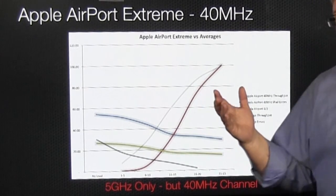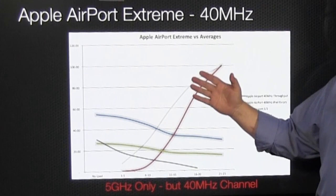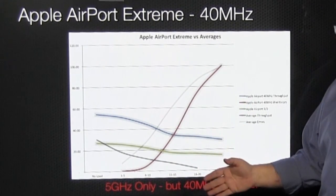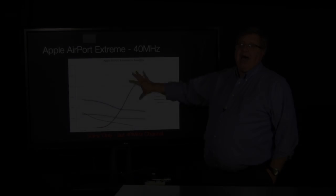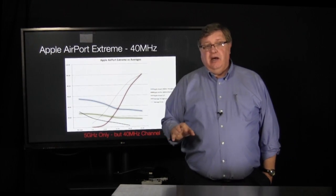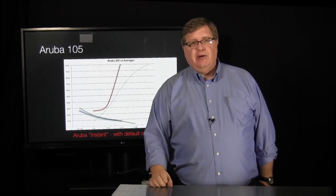And here's our Airport Extreme, way to the right of the average. Blue line is 40 megahertz, yes. More than double our throughput of our average. But even when we cut it in half, it was better. Again, this was not included in the average calculations. It was also not included in the rankings. I just wanted to show you where that was.